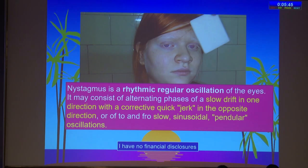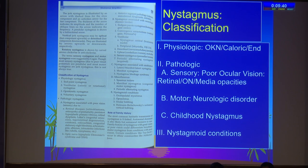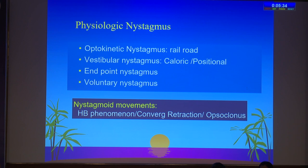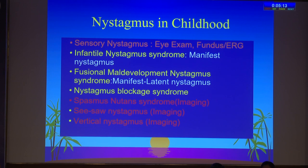We are going to talk about preferred practice for evaluation and treatment of nystagmus. Nystagmus is a rhythmic regular oscillation of the eyes. We will deal with physiologic, pathologic, and nystagmoid conditions separately. Physiologic nystagmus includes optokinetic, vestibular, end-point, and voluntary nystagmus. Coming to the basic group we mostly deal with — nystagmus in children — which falls in three categories: sensory nystagmus (requiring eye examination, fundus, ERG, and VEP); infantile nystagmus, fusional maldevelopment nystagmus, and nystagmus blockage syndrome; and spasmus nutans, seesaw nystagmus, and vertical nystagmus. In all three of the last group, imaging is mandatory.